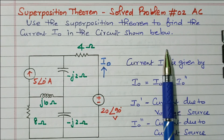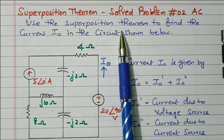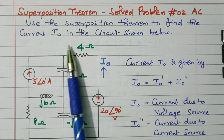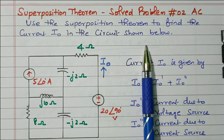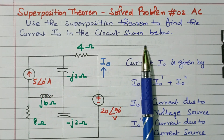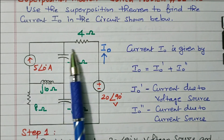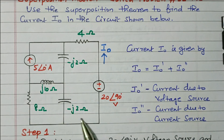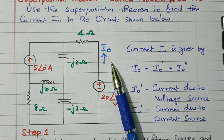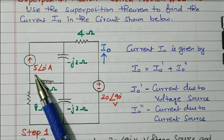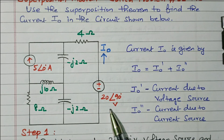Now we will go to the topic. The problem statement is: use the superposition theorem to find the current I₀ in the circuit shown below. We need to find the current I₀ for the given network. The circuit has one current source, one voltage source, capacitors, an inductor, and two resistors.